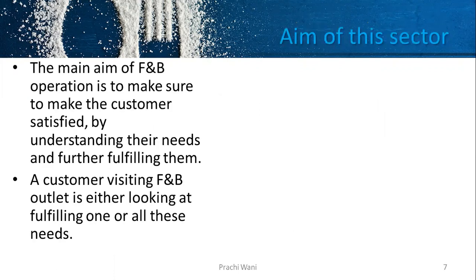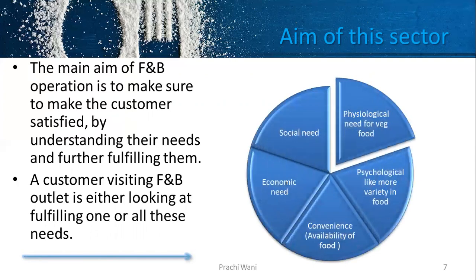The main aim of F&B operation is to make the customer satisfied by understanding their needs and further fulfilling them. A customer visiting an F&B outlet is looking at one or all of five different needs. The first is the social need — as we all know, a human being is a social animal, so when a customer visits an F&B outlet, they are looking at spending time with family or friends.